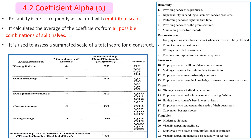The second method is coefficient alpha. Reliability is most frequently associated with multi-item scales. It calculates the average of the coefficients from all possible combinations of split halves.